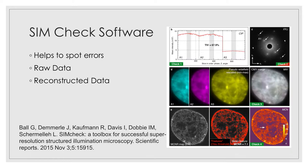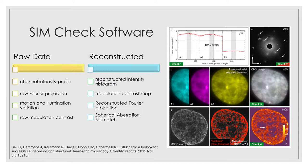There are four checks you can do on the raw data, and four checks you can do on the reconstructed data. So on the raw data, you can do a channel intensity profile. This is a plot of the average intensity in each Z-plane, and it shows if there's any photobleaching, or if the intensity changes between the different illumination patterns and angles. There's also a raw Fourier projection of the whole Z-stack of raw images. There should be first and second order spots visible, which represent the high frequency information. There's a motion and illumination variation check. This does an overlay of the five phase shifted images on top of each other, to see if there's any uneven illumination, or if the sample moved during imaging, as this can cause reconstruction artefacts. There's a raw modulation contrast check. This is the contrast of the stripes. It's important to have a good contrast for good reconstruction. And this can also recommend a value for the Wiener filter, which is applied during the reconstruction.